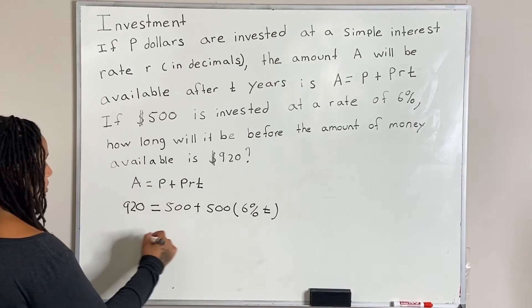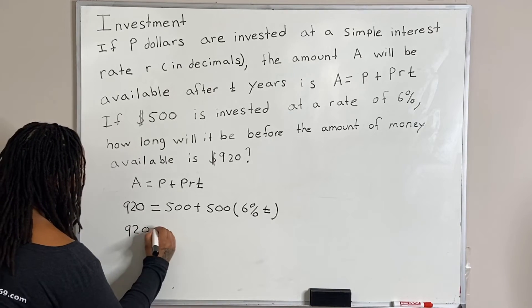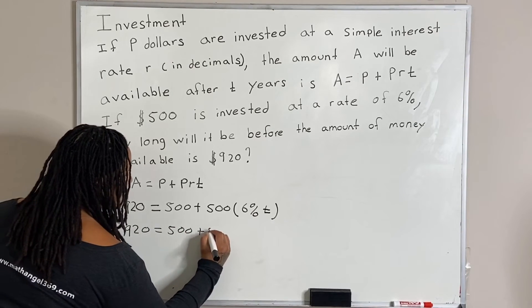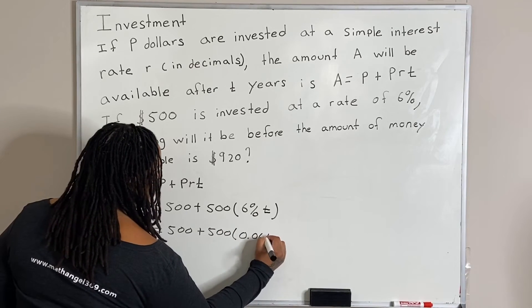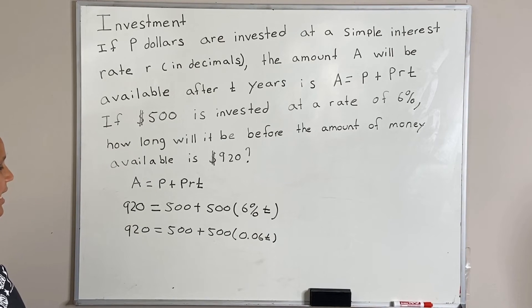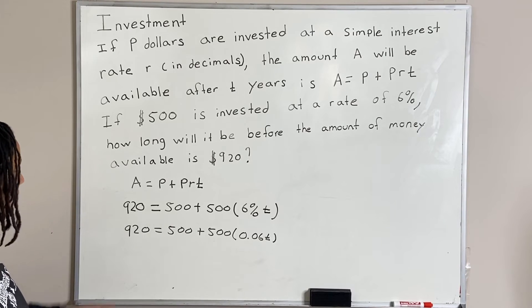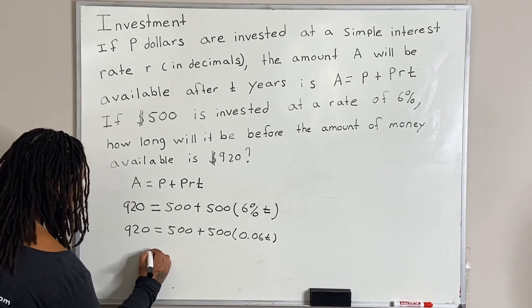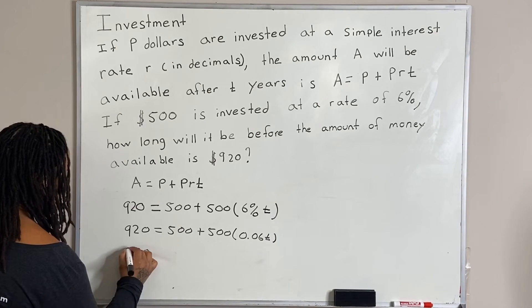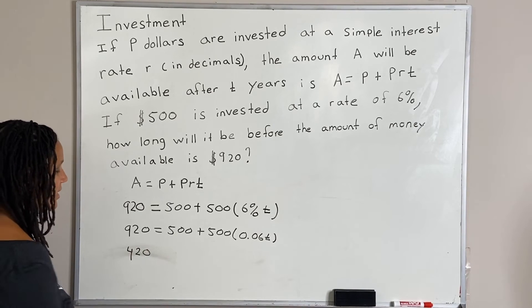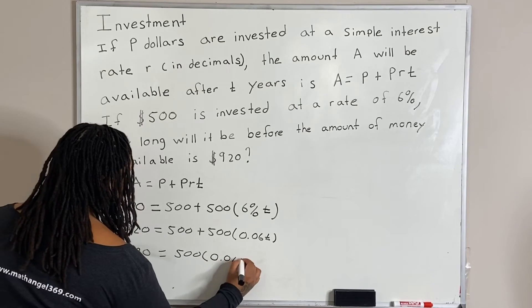So I'm just going to convert 6% into a decimal. So we have 920 is equal to 500 plus 500 times 0.06T. So now let us go ahead and subtract 500 from both sides. So 920 minus 500 is 420.